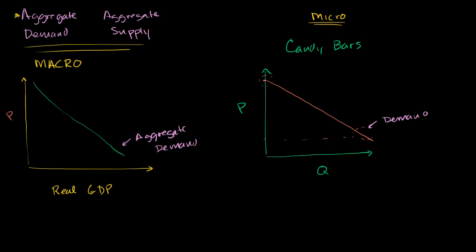The first is called the wealth effect. The wealth effect is a little non-intuitive, because when prices have gone down, you might think wages have gone down, profits have gone down, people get less optimistic, and then the economy will shrink.